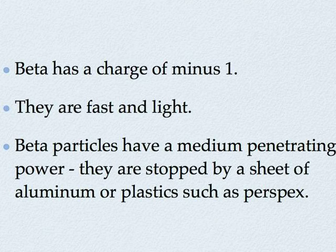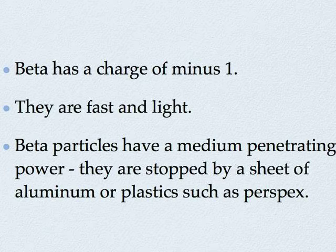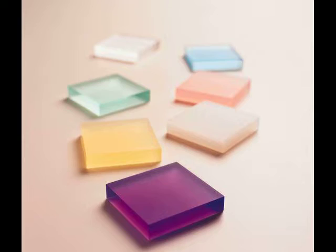Beta has a charge of minus one. They are fast and light. Beta particles have a medium penetrating power. They are stopped by a sheet of aluminium or plastics such as Perspex.